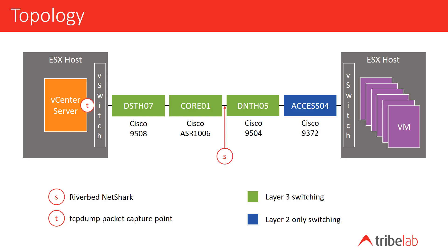The problem on this occasion was that the vCenter server lost connection to its agents across the data center, and we have a trace of one of those failures. We actually have two traces: one captured on the vCenter server itself, which runs under Windows, and the other captured using a Riverbed Netshark device running at a midpoint in the network.